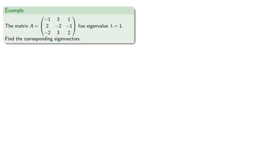For example, suppose we know that this matrix has eigenvalue lambda equal to 1. Let's find the corresponding eigenvectors. Since lambda equals 1 is an eigenvalue, then the eigenvectors v satisfy Av = v.